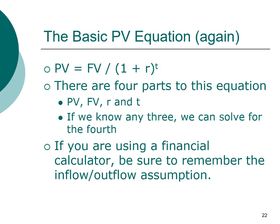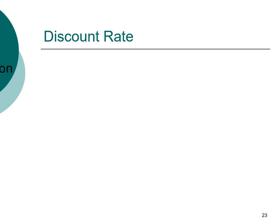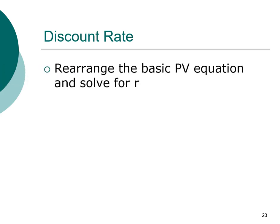We have four factors, as mentioned. We already went over how to compute future value and present value. Next, we're going to look at the interest rate. Remember that the interest rate has many different names — we're going to solve for it, and it's also called the discount rate. We can rearrange the present value formula to solve for the discount rate. The original formula is: future value equals the present value times one plus the discount rate, raised to the time period.